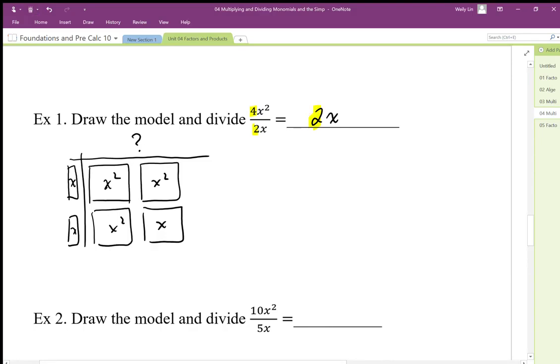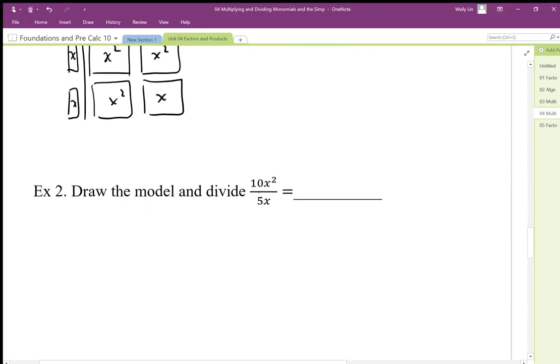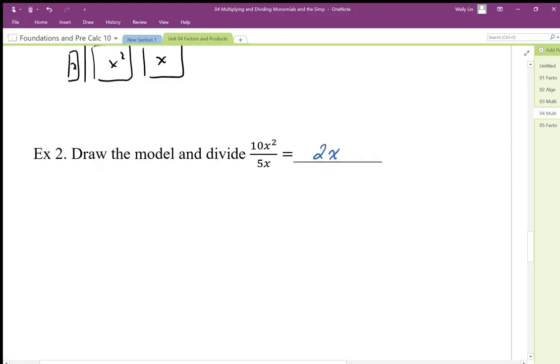In here we can draw this out first, so we can actually work this out. The answer is going to be 2x: 10 divided by 2, x² divided by x. If we were to draw the picture, the area is 10x².